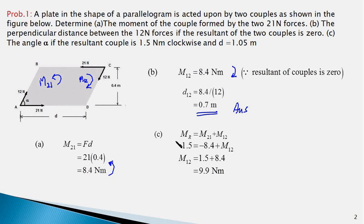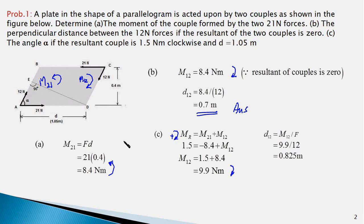The resultant moment equals the sum of the two moments. Taking clockwise as positive, the resultant is +1.5 newton-meters. Since m21 is anti-clockwise, it is minus 8.4 newton-meters. Rearranging gives m12 equal to 9.9 newton-meters clockwise. The perpendicular distance d12 equals 9.9 divided by 12, which is shown in the figure as distance ED.